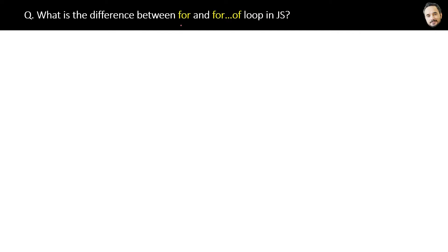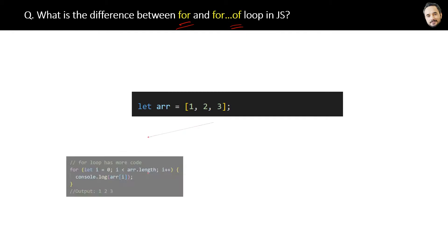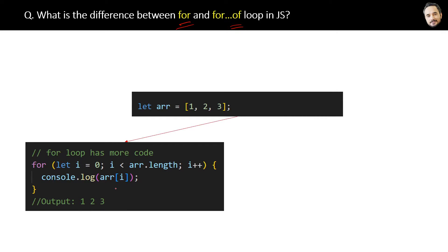What is the difference between for and for...of loop in JavaScript? For loop we already know - if this is the array, then we can use a for loop like this to log all the elements of this array. Here we are initializing, then condition, and then incrementing.